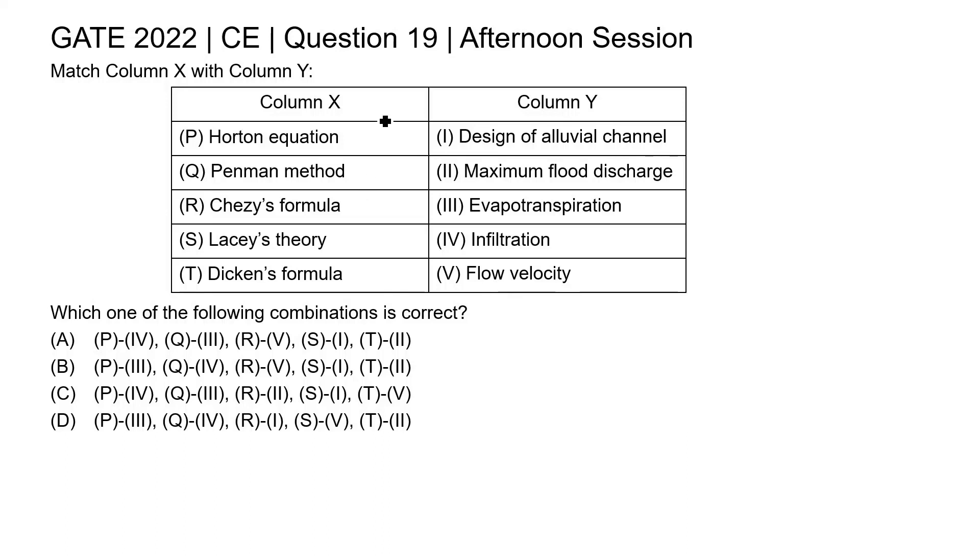In this question, two columns are given. In column X various theories are given, and in column Y the purposes are given. We need to do the correct match among these equations or theories and the purposes given in columns X and Y. Let's understand each equation or theory first.